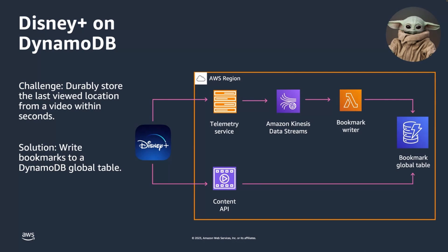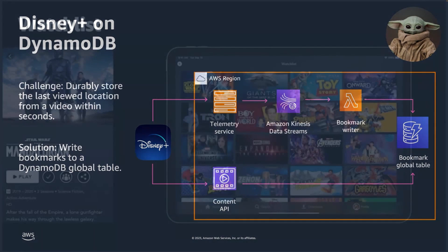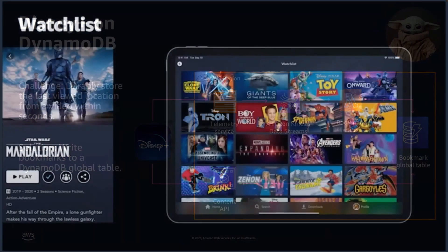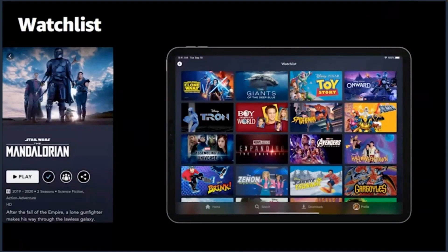The reading doesn't happen nearly as often, so it just goes through their normal API gateway. Once you start using DynamoDB and get comfortable with it in a global context like global tables, it's not uncommon to see it work well for other use cases inside your application. That's certainly been true at Disney Plus — they've also implemented the watchlist functionality.